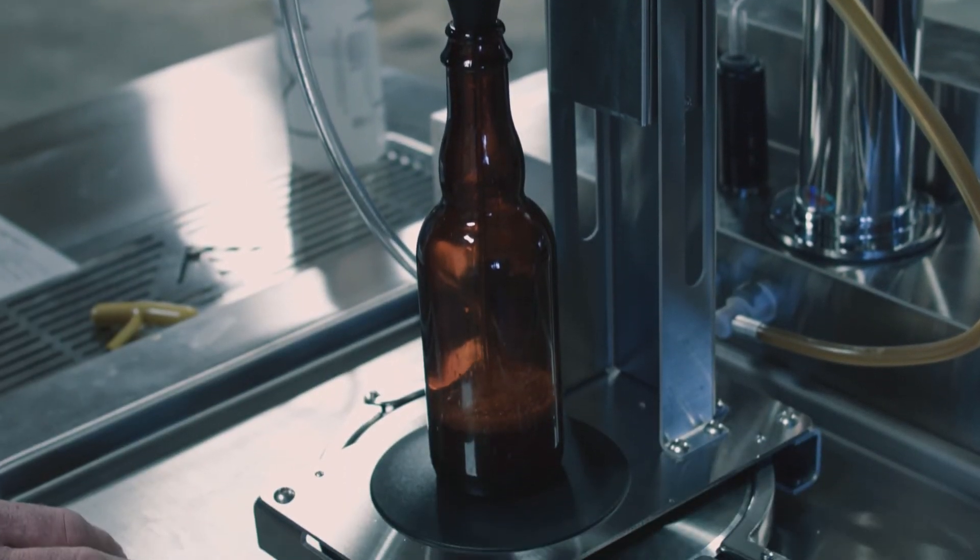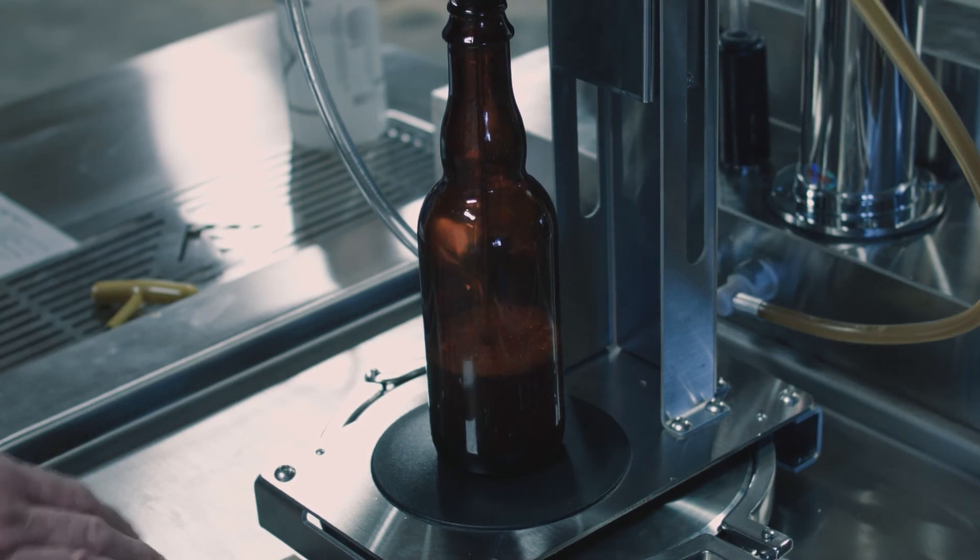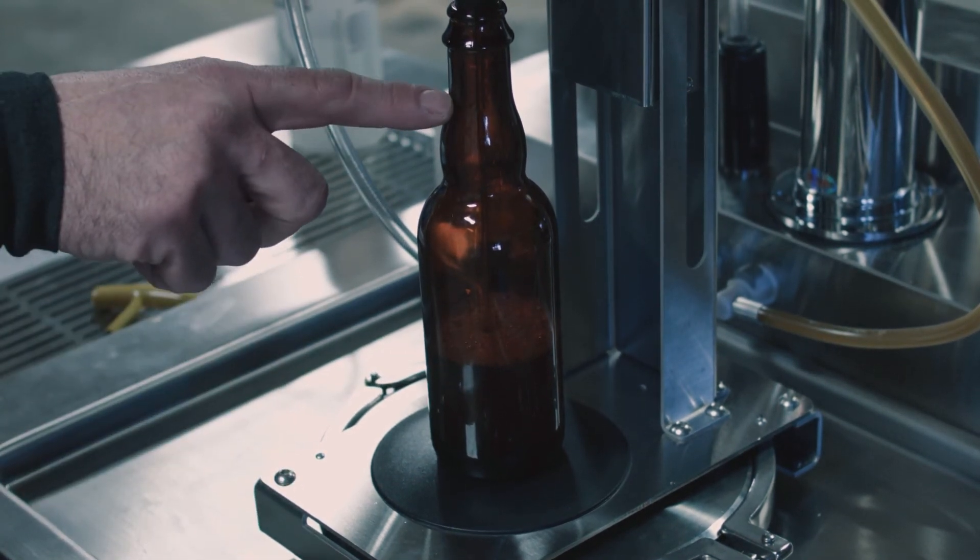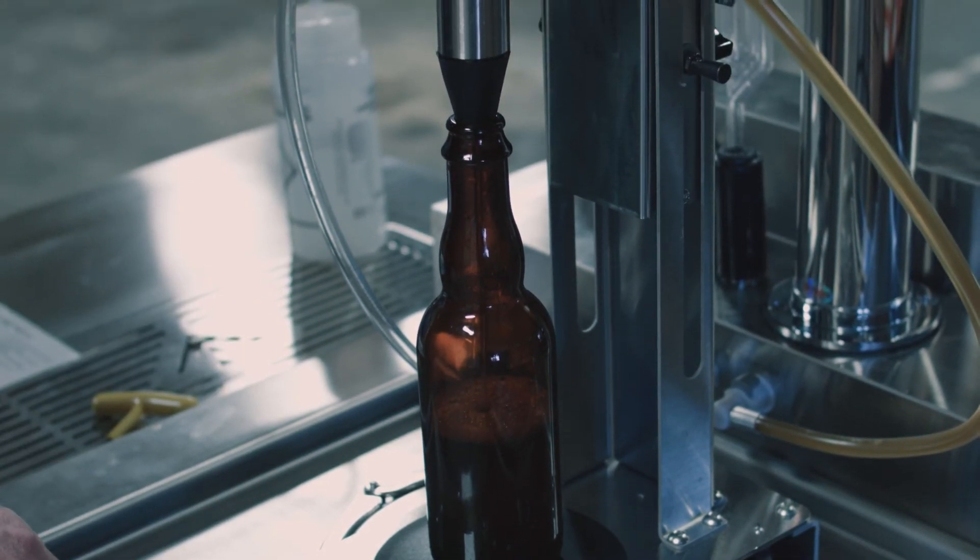We should see beer coming up the level of the bottle, and we're watching that level. Once we get to about an inch or two from the top, I'm going to turn it back to the stop position.